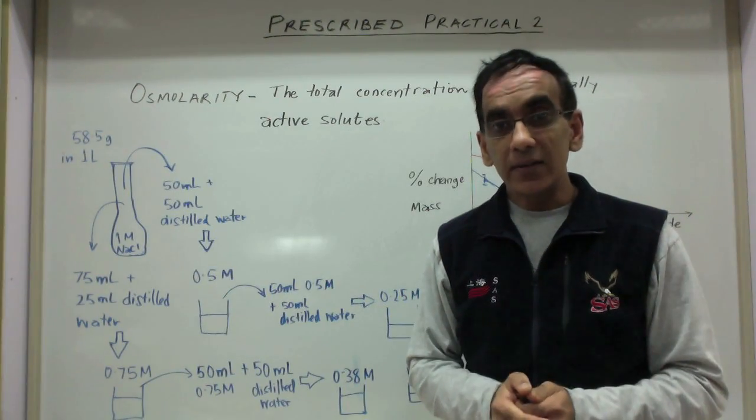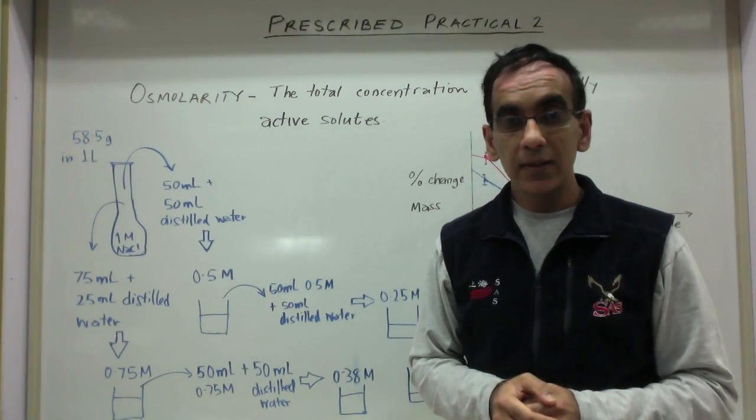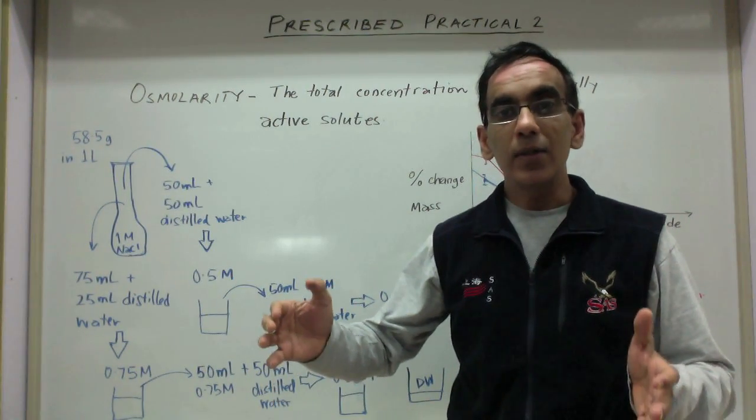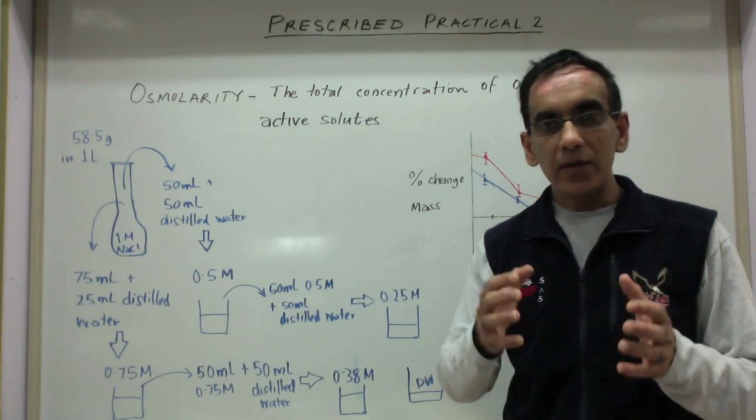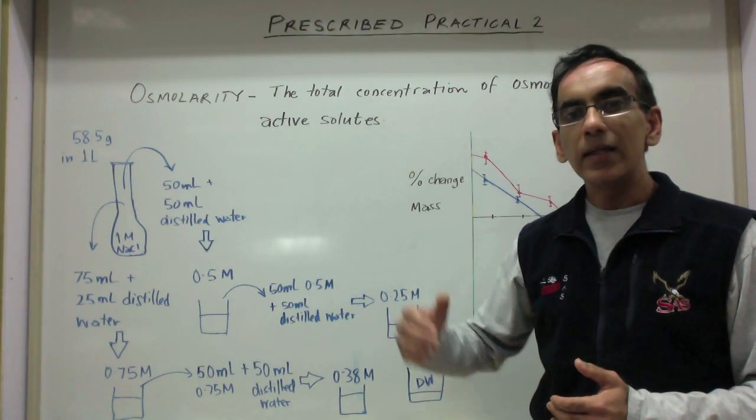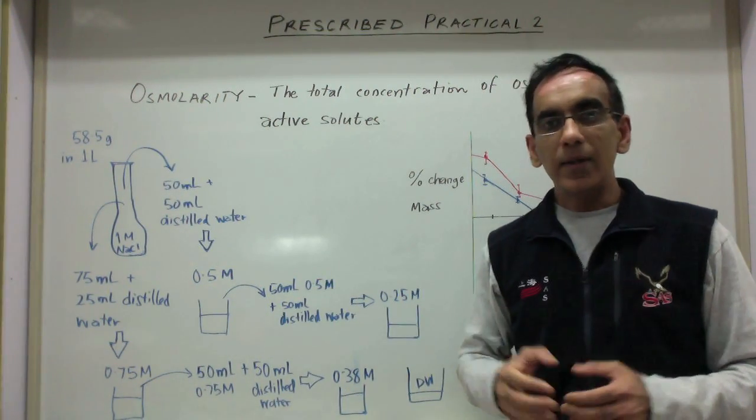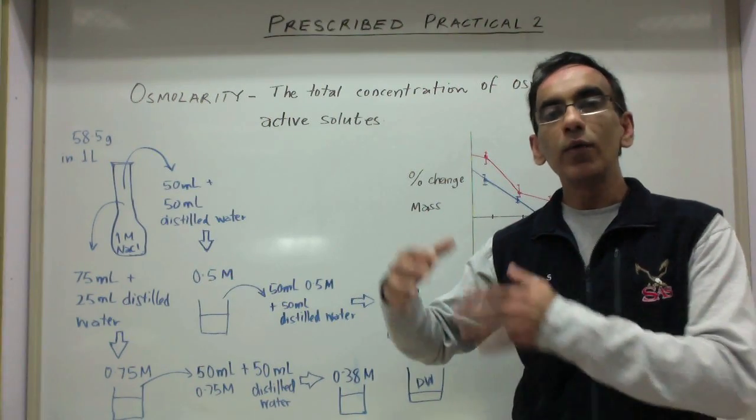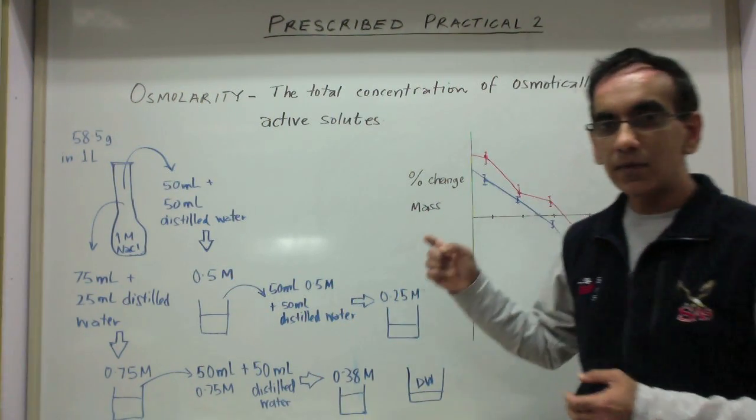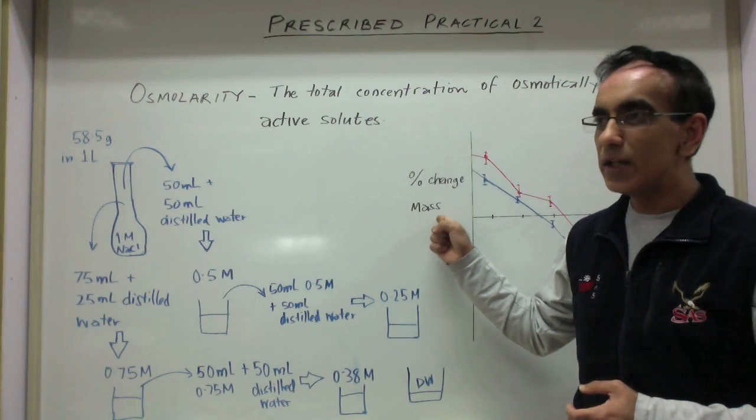Ideally, you should do five trials of each concentration and then organize all of your raw data into a table. You should find the difference between the mean final mass and the mean initial mass, and then place this difference over the initial mass multiplied by 100. This would give you the percentage change in mass.